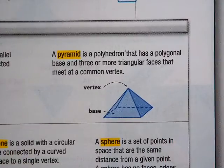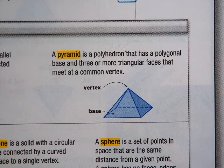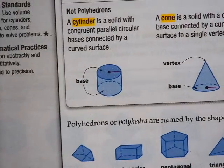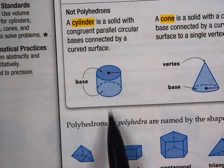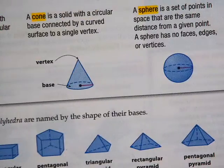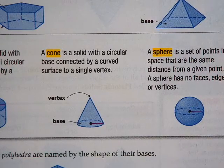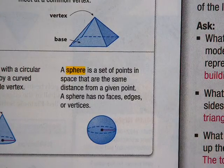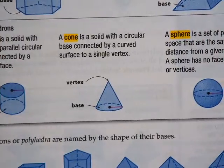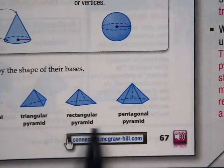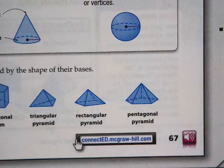A pyramid is a polyhedron with a polygonal base and three or more triangular faces that meet at a common vertex. Notice, with a cylinder, the bases are the same and parallel to each other. A cone is kind of like a pyramid in that it comes to a point, but there are no triangular faces. And then there's a sphere. So here are names of things: triangular prism, rectangular prism, pentagonal prism, triangular pyramid, rectangular pyramid, pentagonal pyramid — all different sorts of shapes we can name.